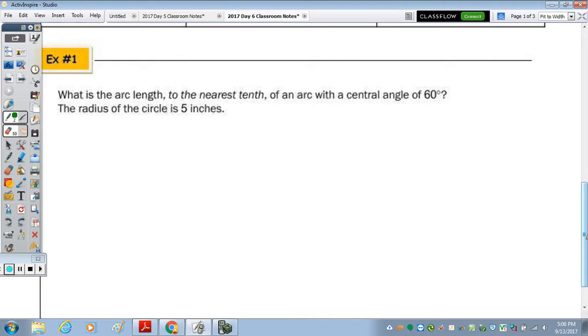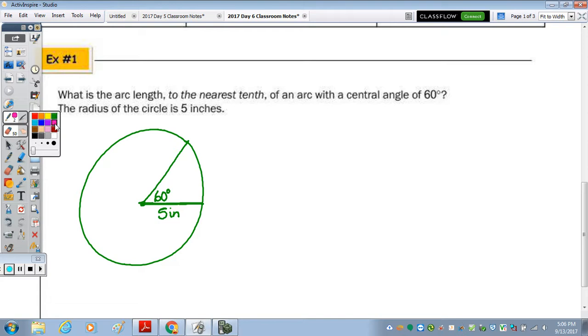So number one, what is the arc length to the nearest tenth of an arc with a central angle of 60? So let's draw a picture. So here's a circle. I'm going to draw my radius horizontal. So 60 degrees, and I know straight up is 90, so I'm going to say 60 is here. The radius of the circle is 5 inches. We're looking for arc length, so I'm looking for this here.